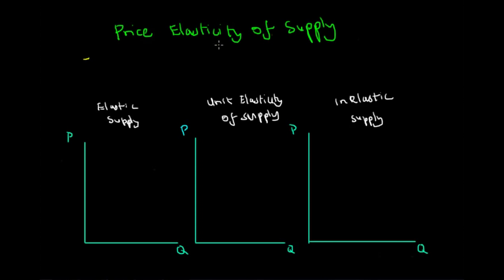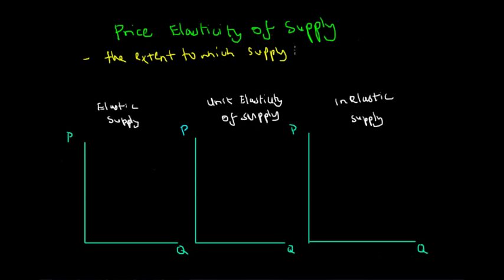So how does price elasticity affect the supply and decisions of producers? The definition of the price elasticity of supply is the extent to which the quantity supplied responds to price changes in the market — that is, the extent to which supply responds to changes in the market price.